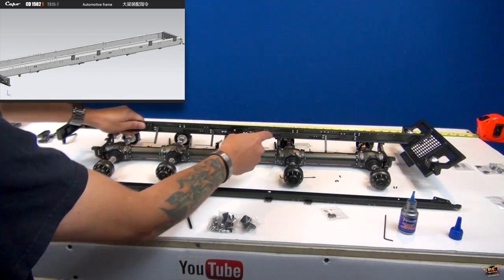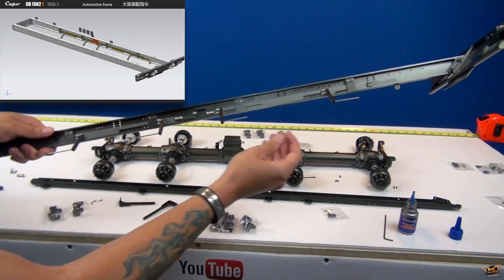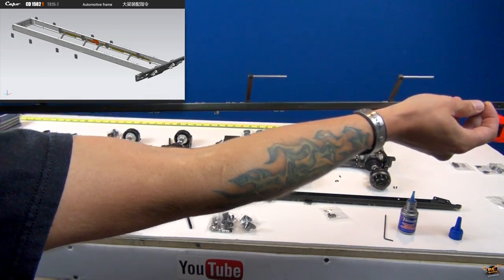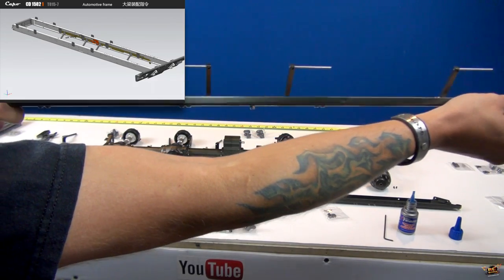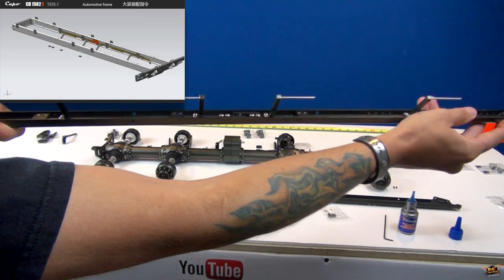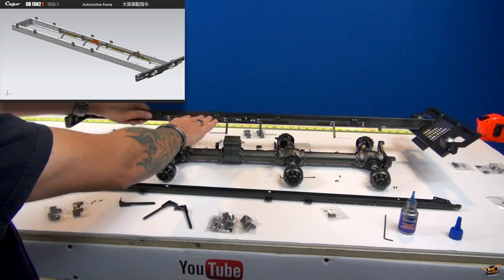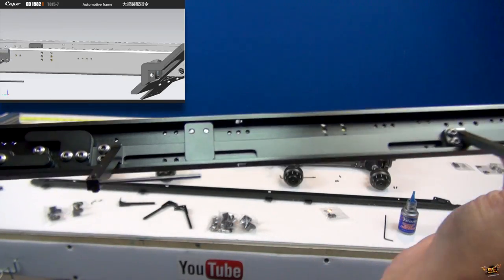And then a servo itself will actually move one arm. I'm sure it's a servo. You see? And it's going to create a locking and unlocking ability for the whole Capo 15 821. So that's what this is set up for. Isn't it incredible? The engineering that just went into this alone.